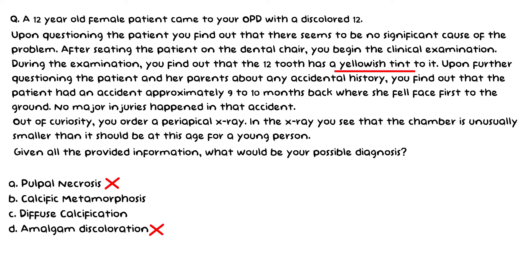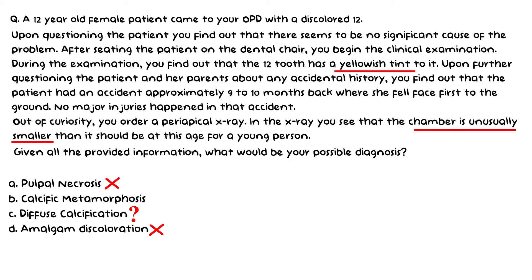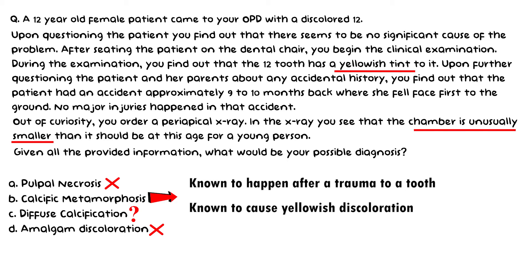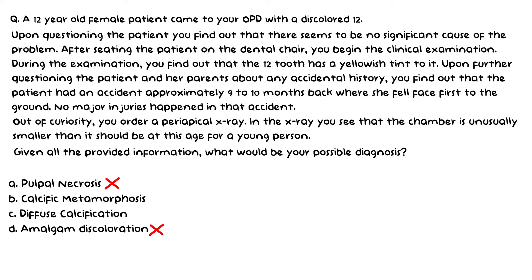From the radiographic findings, we can safely say this is a type of calcification, since the chamber appears smaller than normal, especially for a younger patient. Diffuse calcification is not visible on radiographs — it is only visible histologically — so you cannot tell by radiograph that a tooth is undergoing diffuse calcification. Additionally, diffuse calcification has not been associated with yellowish discoloration of the crown. On the contrary, calcific metamorphosis is known to occur after trauma, cause yellowish discoloration of the crown, and the first radiographic finding is narrowing of the pulp chamber and canals. Putting all the information together, the evidence for calcific metamorphosis outweighs diffuse calcification, making the correct answer B — calcific metamorphosis.